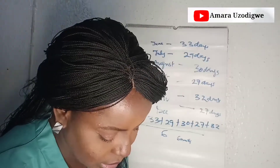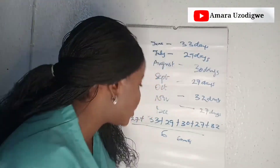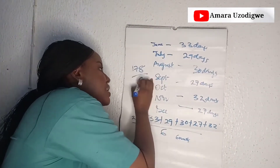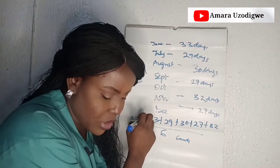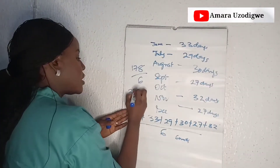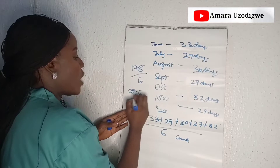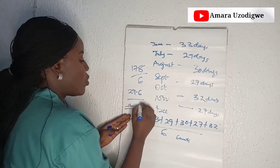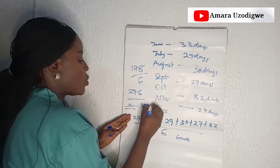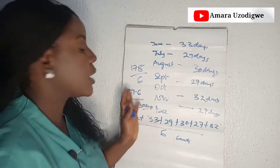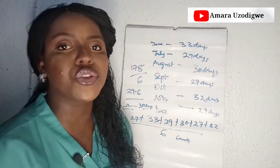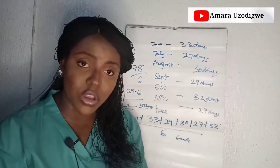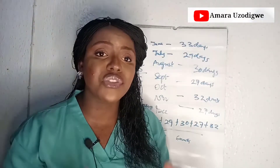So: 33 + 29 + 30 + 27 + 32 + 27 = 178, divided by 6 = 29.6, which is approximately 30 days. So in 2018, my cycle was 30 days. For you to know your cycle days, you need to monitor your cycle for six good months. Start now — it will help you know yourself.